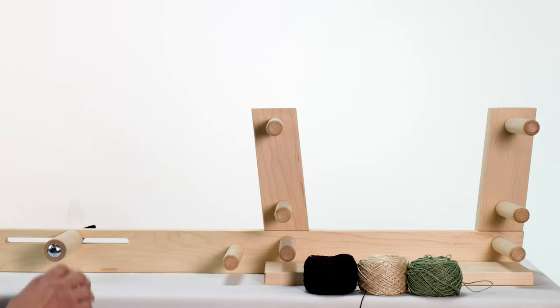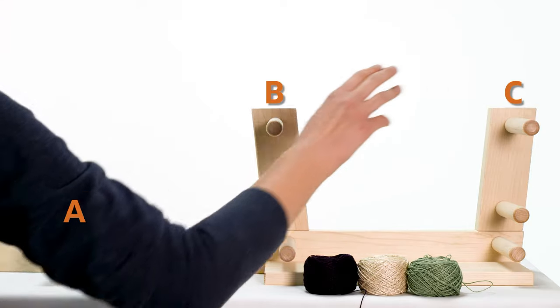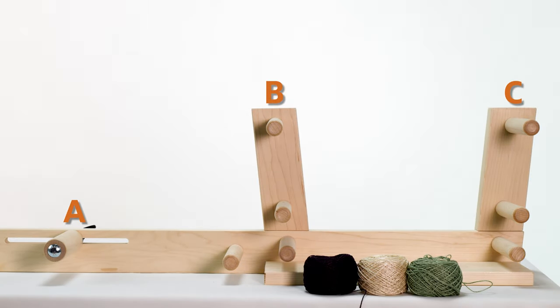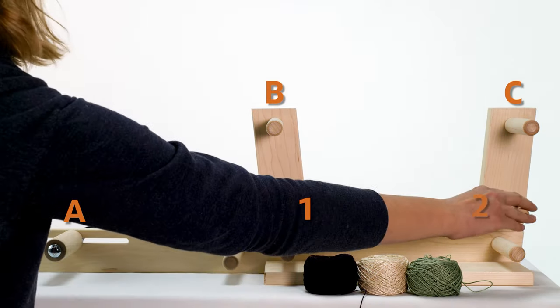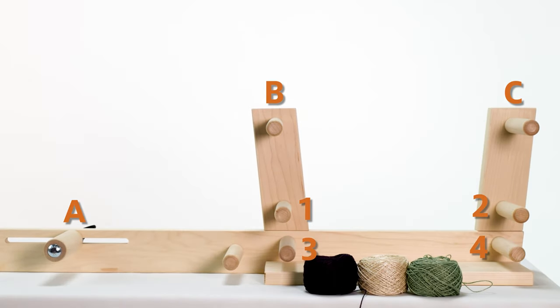There are several pegs on the loom. A, B, and C are used for the first part of the warp. 1, 2, 3, and 4 help to determine our warp length.